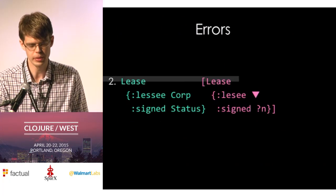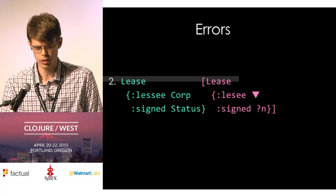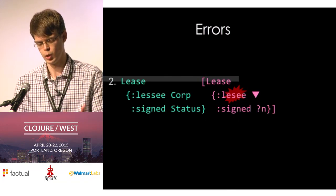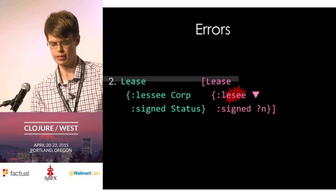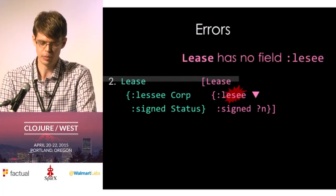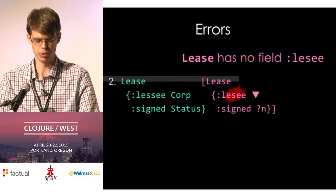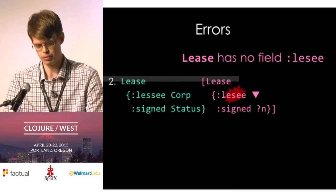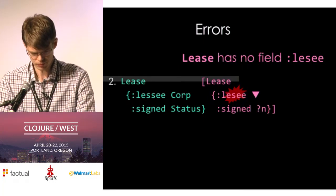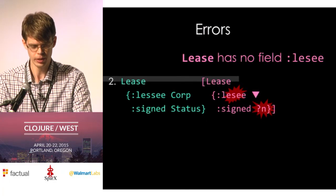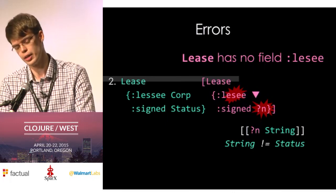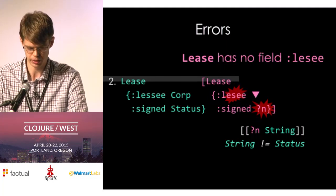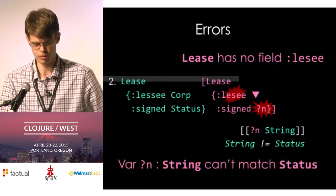Another nice thing about this approach is it makes it easy to give sensible error messages. When you're expanding definitions and using a field name that doesn't exist, you always have the type at hand and the expression you're looking at — so you can make an error message that says 'lease has no field: your misspelled word.' This can be as easy as throwing an exception in your recursive function. Similarly, if an instantiation step fails — say you try to bind n to a status field instead of a string — you have all the information you need for a sensible error message.